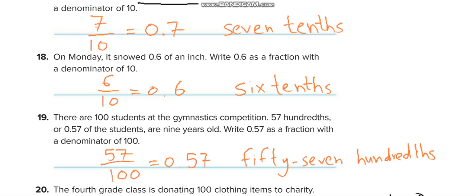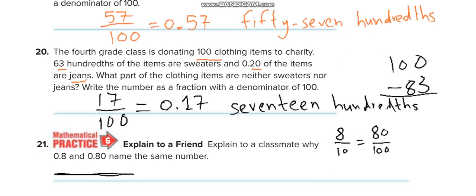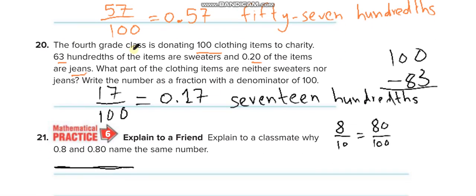The fourth grade class is donating 100 clothing items to charity. 63 hundredths of the items are sweaters and 0.20 of the items are jeans. What part of the clothing items are neither sweaters nor jeans?